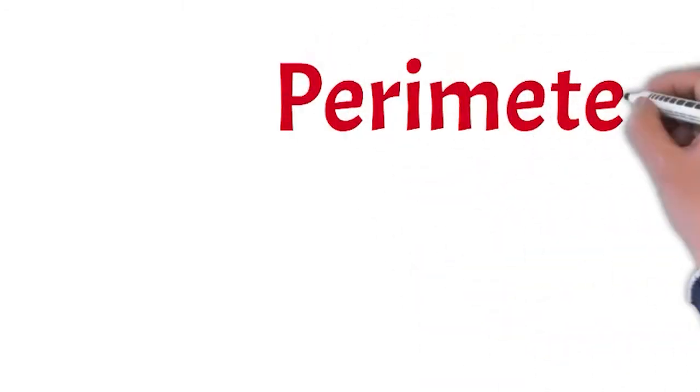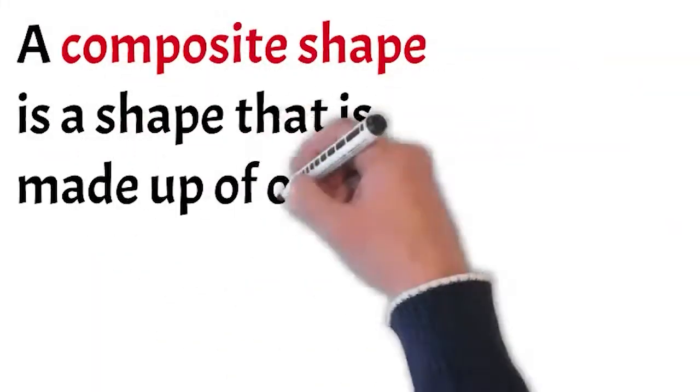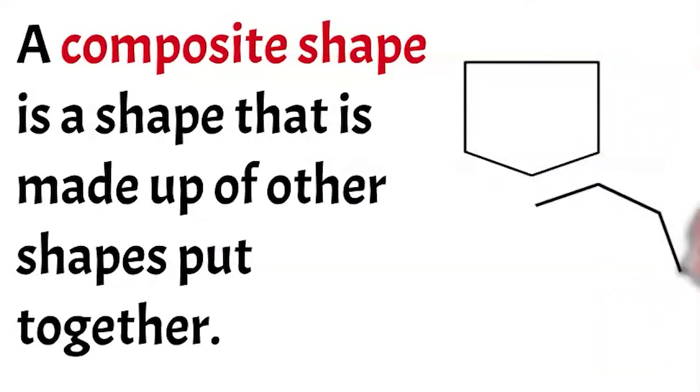Welcome back to Underwater Math. Let's talk about finding the perimeter of composite shapes. What is a composite shape? A composite shape is a shape that is made up of other shapes put together.